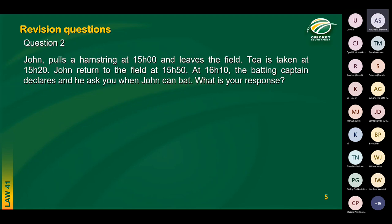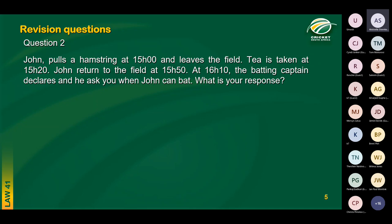Another penalty time question, again using the method of breaking it into smaller pieces. John pulls a hamstring at 15:00 and leaves the field. Tea is at 15:20. When there's a break or interruption, calculate the penalty time owed at the start of that break. John went off at 15:00, tea was at 15:20, so at the start of tea John owes us 20 minutes.